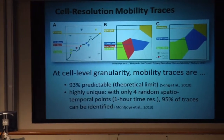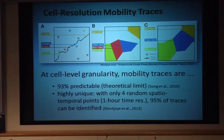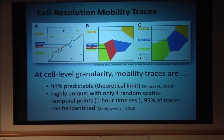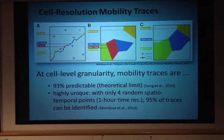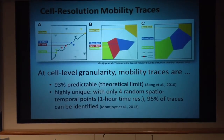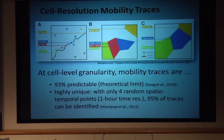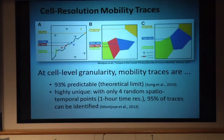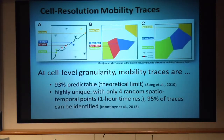That's a theoretical bound — it's sort of like the Shannon limit. We don't know how to get there, but theoretically it is 93% predictable. Sometimes I don't go to the gym in the afternoon just to throw them off. Also, these traces are highly unique. With just four random spatiotemporal points at one-hour resolution and cell resolution, you can identify 95% of people.